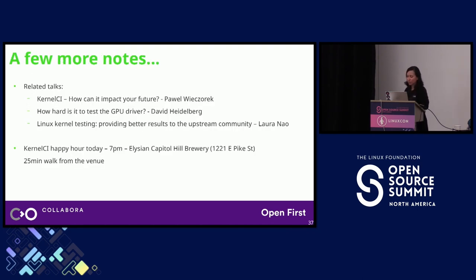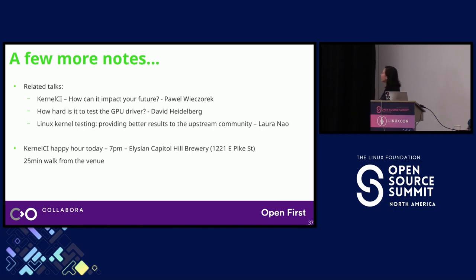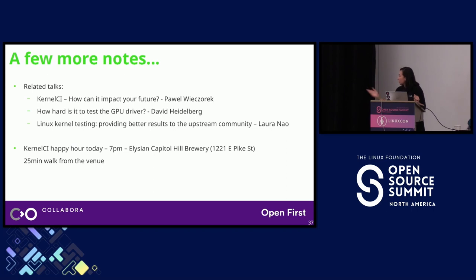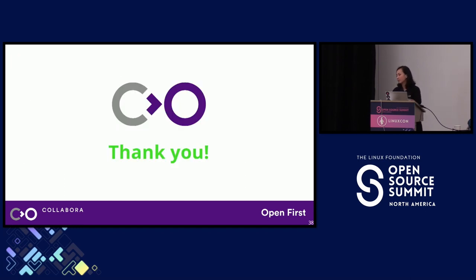Just before questions, a few more notes. There are related talks from today you can check in the recordings: Pavel talking about Kernel CI, David talking about GPU testing, and Laura talking about the quality of tests in the Linux kernel — all really worthwhile watching. Also, today we are having a happy hour around Kernel CI at 7 p.m. at Elysian Capital Hill Burley, about a 25-minute walk from the venue — you are all welcome to join. Thank you, and I'm open for questions.